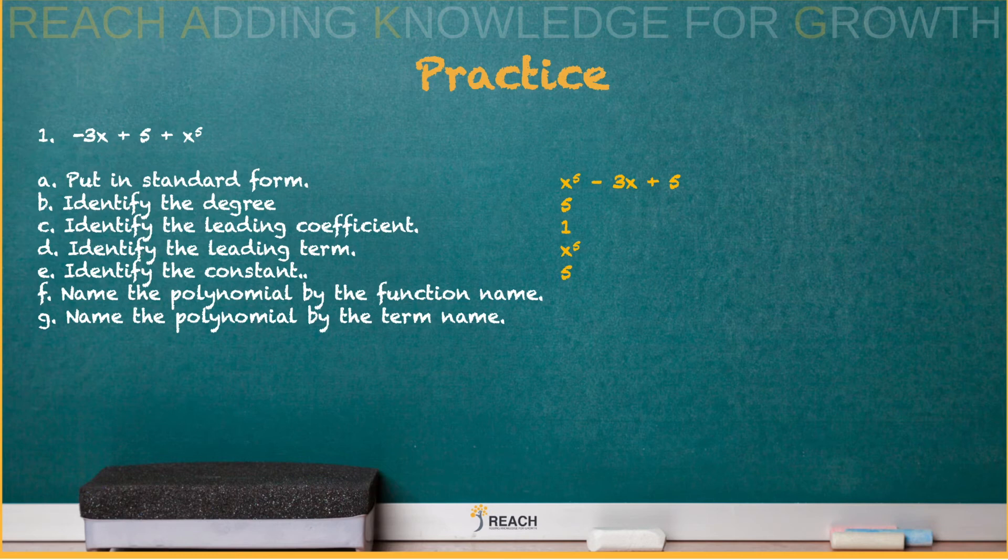Name the polynomial. So what's the name for X to the fifth? That is a quintic. Number of terms, how many terms is it? Uno. Don't stress. Three is a trinomial.